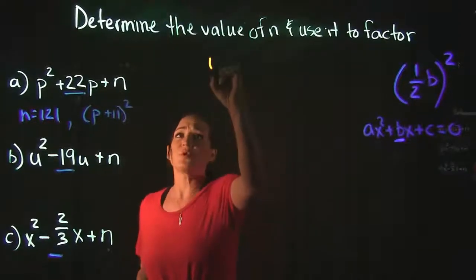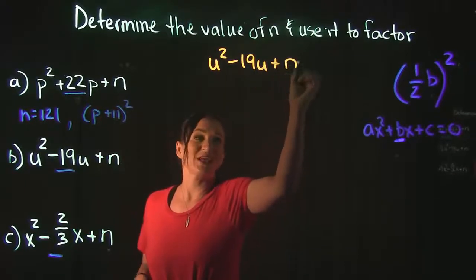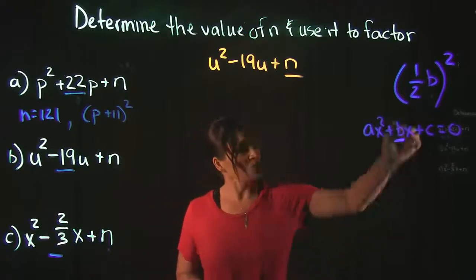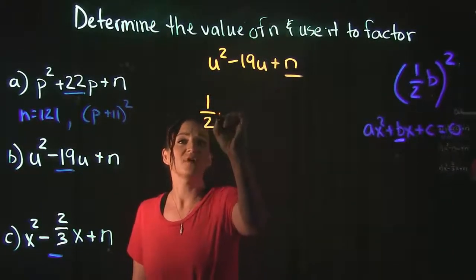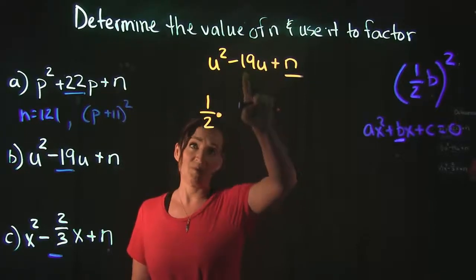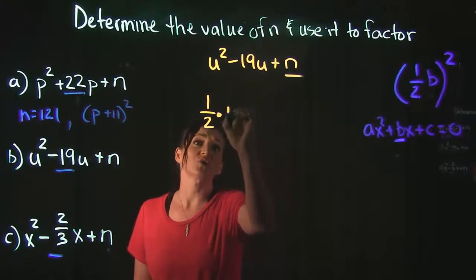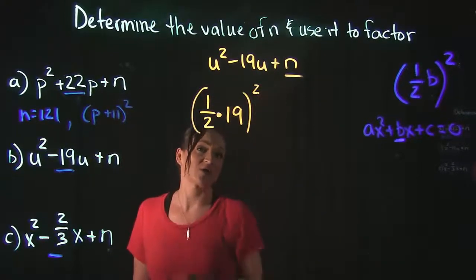So for example b, we have u squared minus 19u plus n is what we're trying to find. In order to find n, we need to use our formula, which means we're taking one half times b. Remember, b is your middle term, the term in front of your first power term. So that is half of 19, and then we're going to square this.